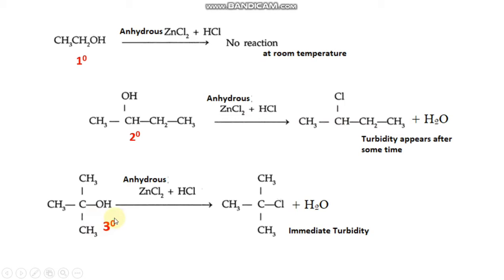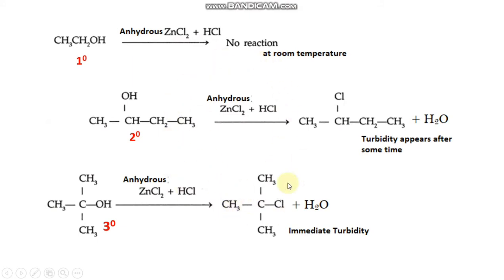Then the tertiary alcohol, 2-methylpropan-2-ol, undergoes reaction with Lucas reagent and there is immediate turbidity. This immediate turbidity indicates the presence of 2-chloro-2-methylpropane. In the case of secondary alcohol, turbidity also appears but generally after some time or within 5 minutes. Primary alcohol does not react with Lucas reagent at room temperature. This is one of the tests used for distinguishing primary, secondary and tertiary alcohols.